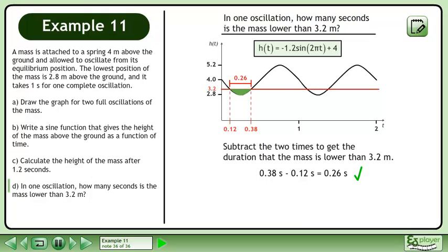Subtract the two times to get the duration that the mass is lower than 3.2 meters. 0.38 seconds minus 0.12 seconds equals 0.26 seconds, which is the answer.